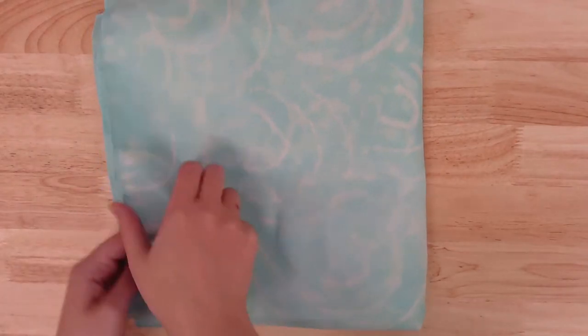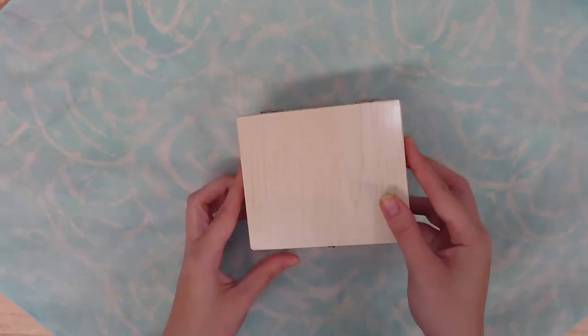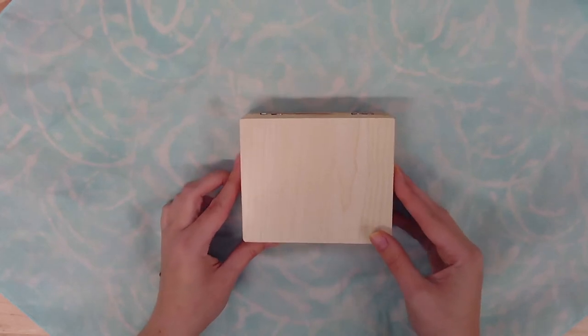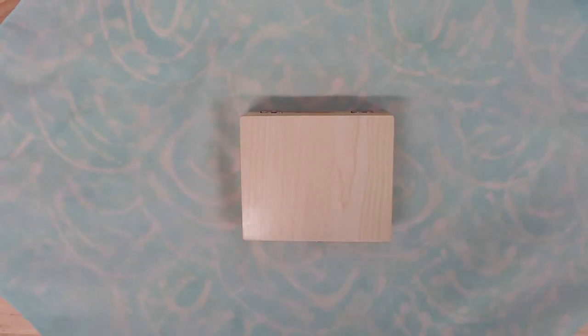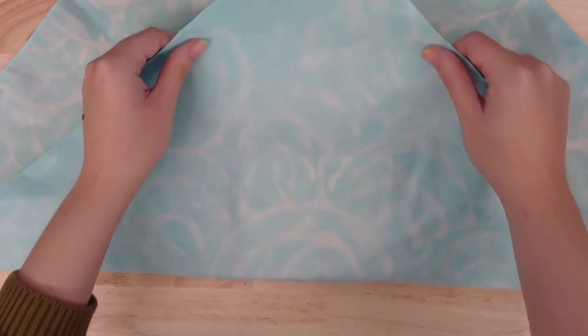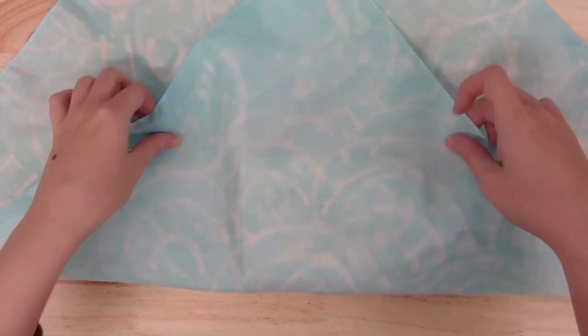Once your fabric is dry, you're ready to wrap a gift. I'm going to demonstrate a simple method for wrapping gifts with fabric based on the Japanese tradition of furoshiki. This method works best on gifts in square or rectangular boxes. To start, turn your fabric so that one of the corners faces you and place the box in the center of your fabric. Now fold the bottom corner up and over the box away from you.